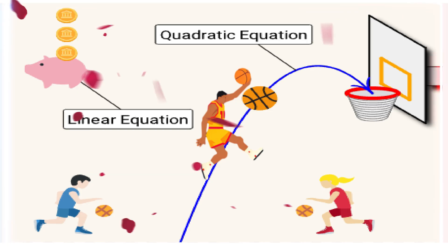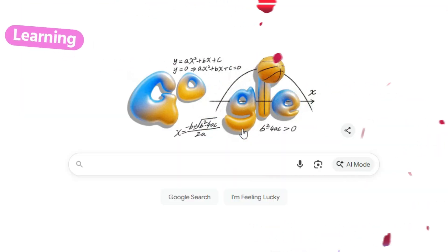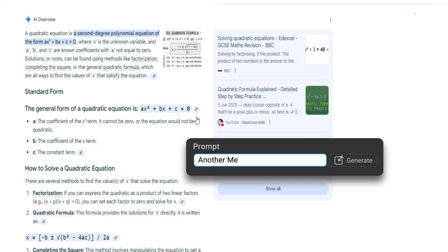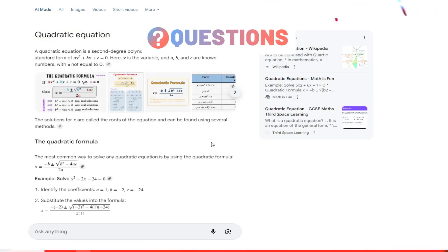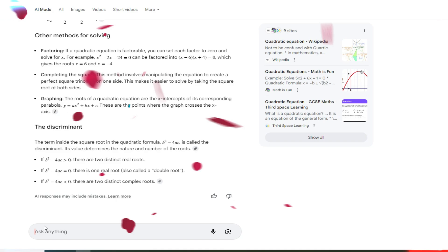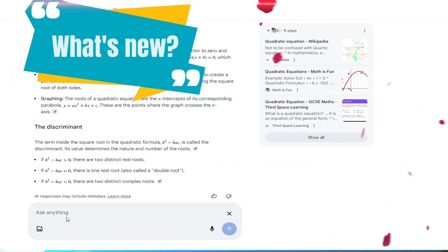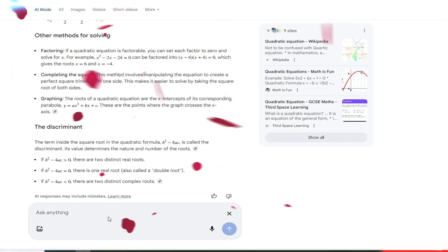Explore the quadratic equation further with AI mode in Google search. You can ask any question that comes to mind and get a helpful, AI-powered response complete with relevant sites on the web. From there, it's easy to ask follow-up questions or explore a new topic of interest.